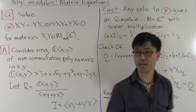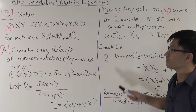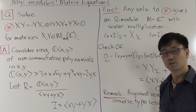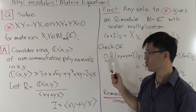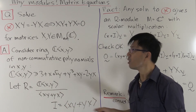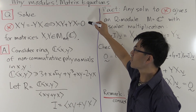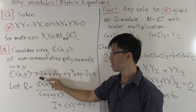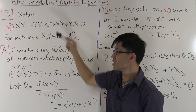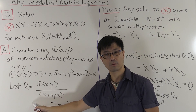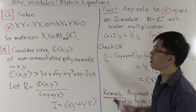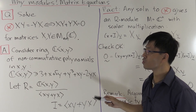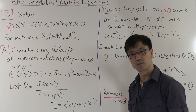So how can we sum up what's happening here? Essentially, solving this matrix equation corresponds to looking at modules over this ring. The equation tells you what you should factor the ring by — so the equation itself corresponds to the ring. And for each solution to this equation, you get a module. So essentially, you can think of modules as just solutions to matrix equations.